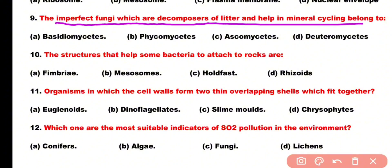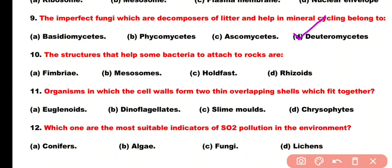Question number 9: Imperfect fungi which are decomposers of litter and help in mineral cycling belong to: Basidiomycetes, Phycomycetes, Ascomycetes, or Deuteromycetes. Correct answer is option D. Imperfect fungi are placed in Deuteromycetes because they have no sexual reproduction.